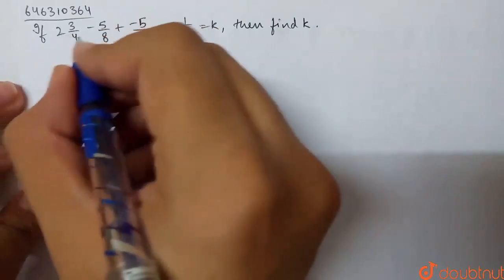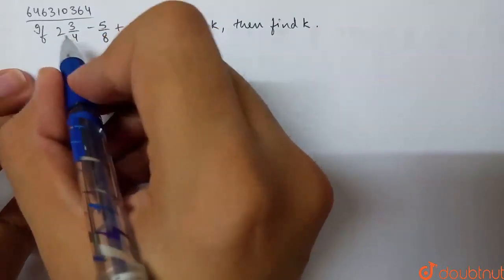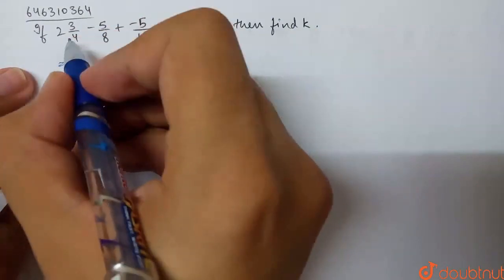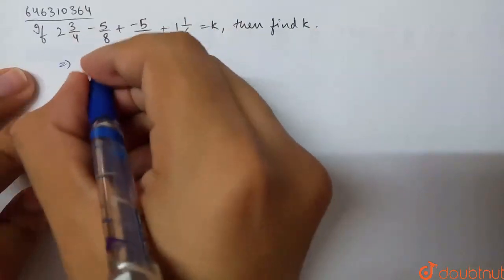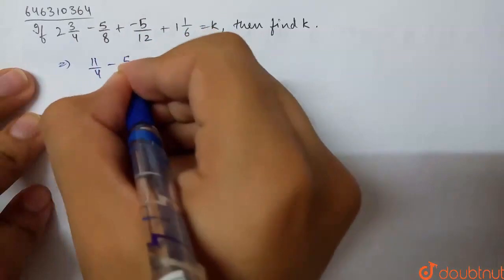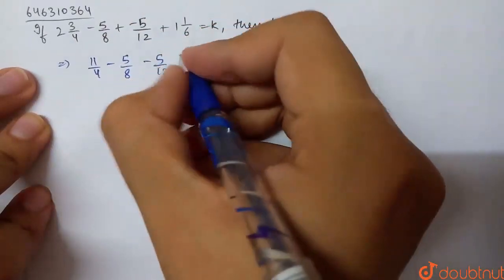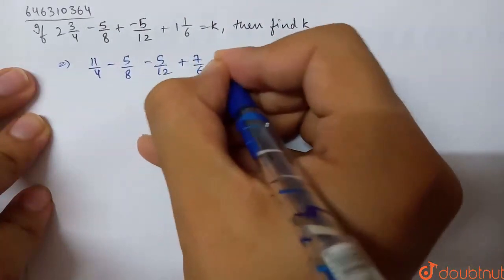To find k, first convert the mixed fractions to improper fractions. 2 3/4 becomes 11/4, where 4 times 2 plus 3 equals 11. Then minus 5/8, minus 5/12, plus 1 1/6 which becomes 7/6, where 6 times 1 plus 1 equals 7. This equals k.